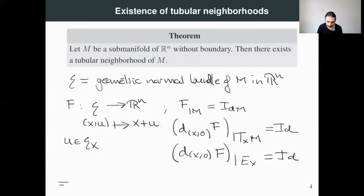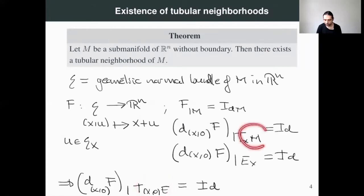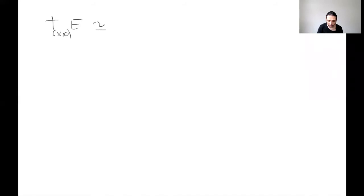What we get is that the differential of f at a point of the zero section, restricted to the sum of these spaces, is going to be the identity. This is just the tangent space to the total space of the vector bundle at the point (x, 0). The reason is that this space is the direct sum of these two spaces. Now we can notice that the tangent space to the total space of the vector bundle at (x, 0) can be identified with R^n.